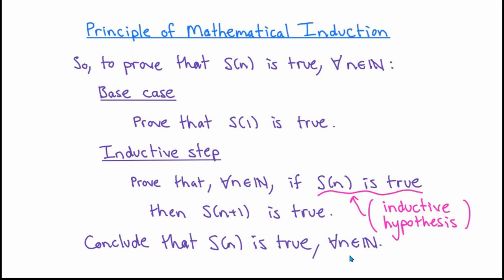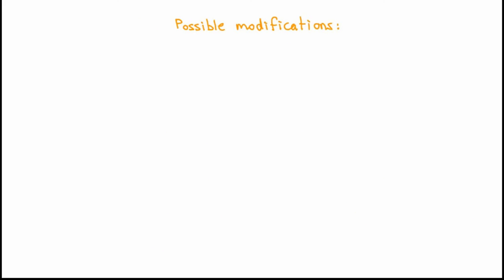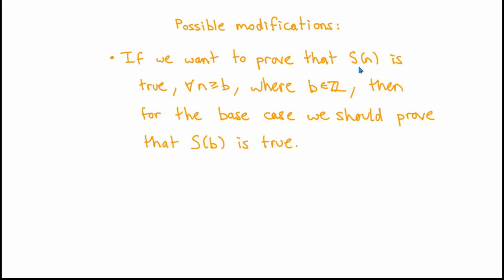Once you've completed the inductive step, you can conclude based on the principle of mathematical induction that s(n) is true for all natural numbers n. I'm going to assume that most of you are familiar with the principle of mathematical induction, so I'm not going to go into detail giving a lot of examples in this video. It is pretty important though, and it's going to come up again both in this video and in later videos. There are a few modifications to the general recipe that I just showed you, and I like to discuss those because they come up pretty often.